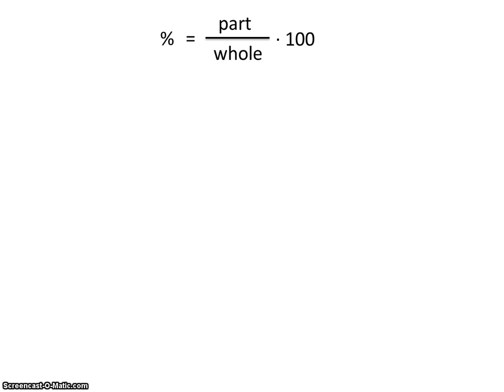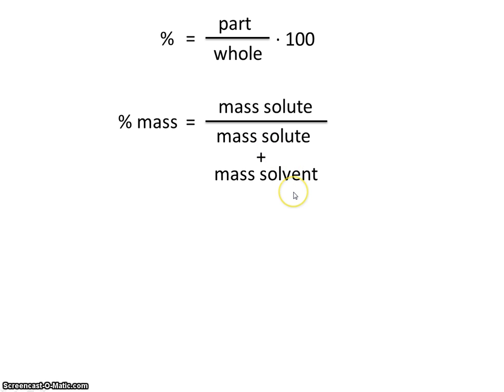So our formula for percent mass doesn't deviate from this at all. The percent mass of a solution is equal to the mass of the solute divided by the mass of the solute plus the mass of the solvent times 100.